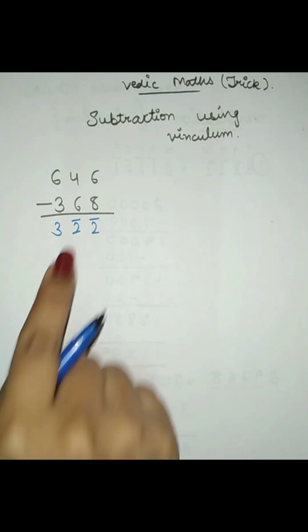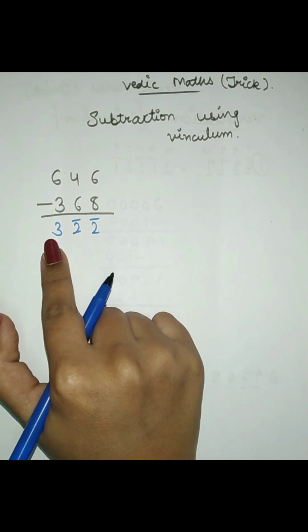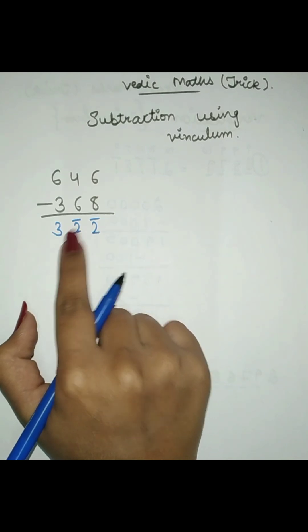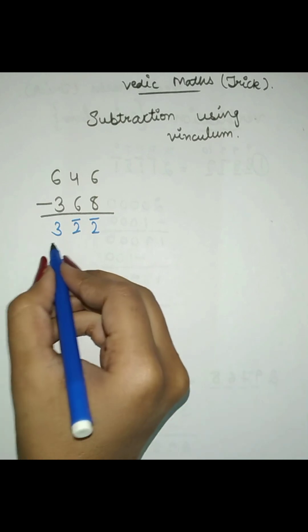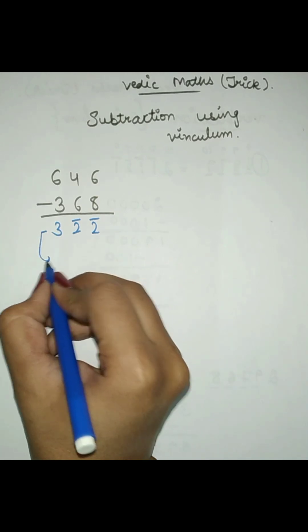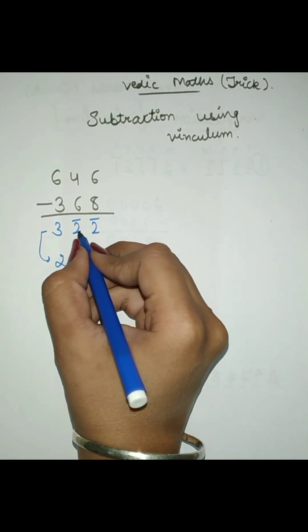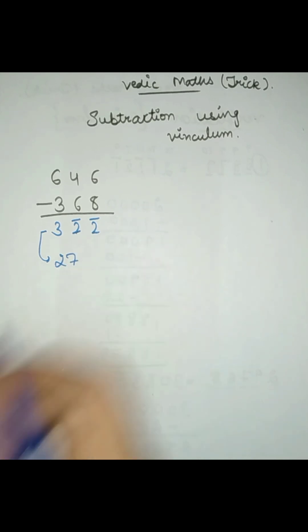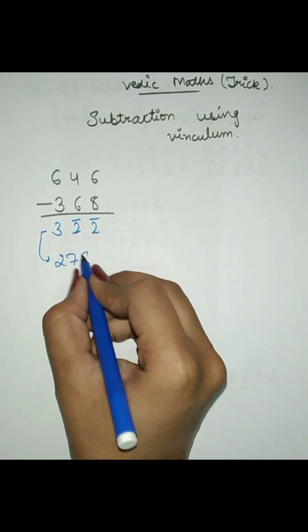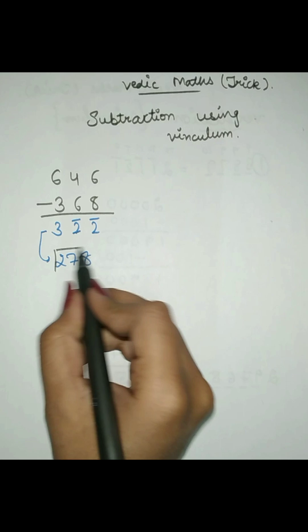These numbers are formed after using vinculum, but this is not the final answer. We have to do the next step — that means we have to reduce the first number by 1 using divinculum. The bar is on these two numbers, so we apply the rule: subtract all from 9 and last from 10. Reducing 3 by 1 gives 2. Then 9 minus 2 is 7 and 10 minus 2 is 8. So therefore 278 is the answer.